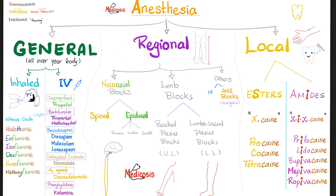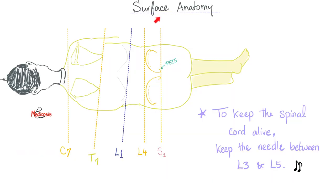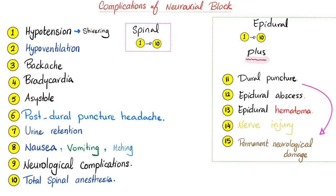We're done with general anesthesia — let's talk about regional. We have neuraxial and limb. For neuraxial: midline in the axis. We have spinal and epidural. Spinal: stick the needle into the subarachnoid space where the CSF is located. Epidural: stick it into the epidural space. You need to master your surface anatomy — to keep the spinal cord alive, keep the needle between L3 and L5. Complications of neuraxial block are many.